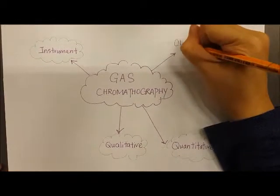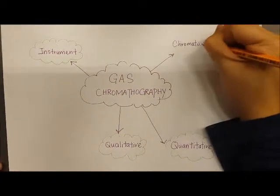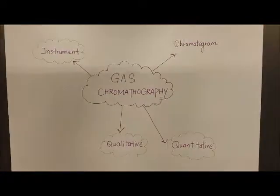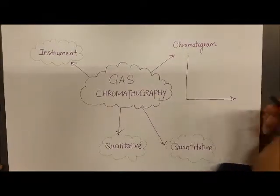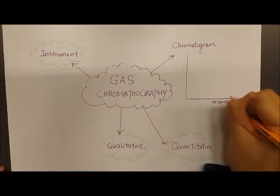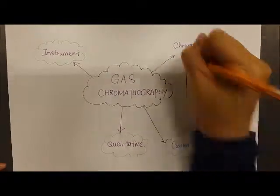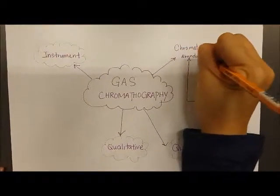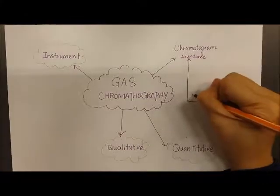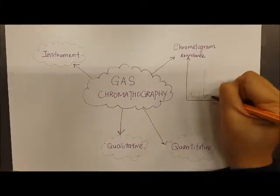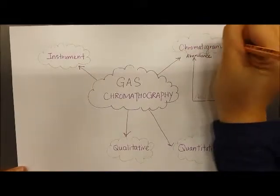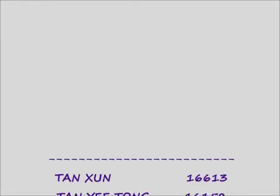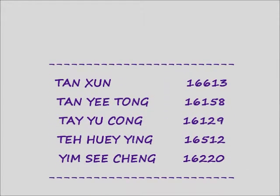A chromatogram is used to display the results of the analysis in which the abundance is plotted against the retention time. The retention time of the graph can be used to determine the identity of the species in qualitative analysis, while the area of the peak is used to determine the amount of each component present in the sample in quantitative analysis.